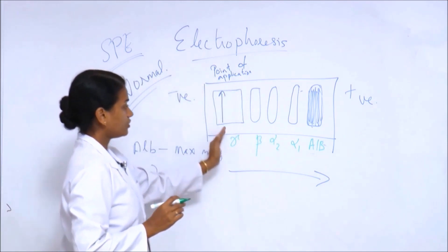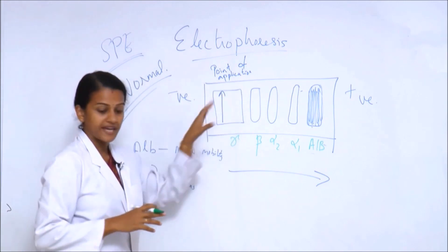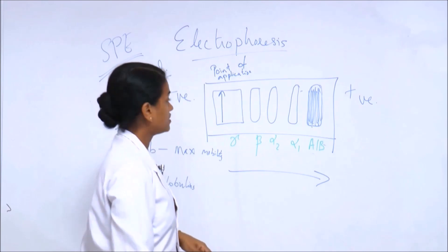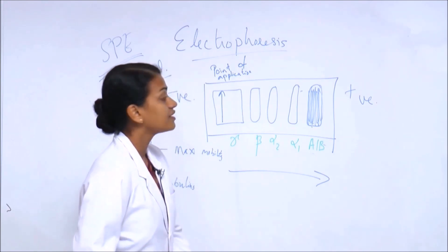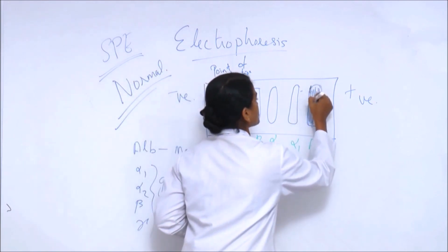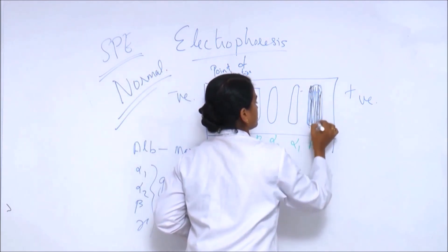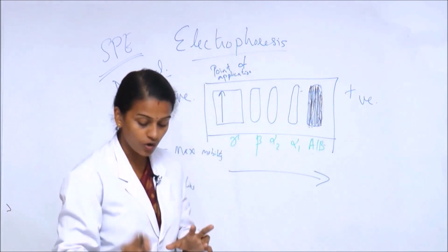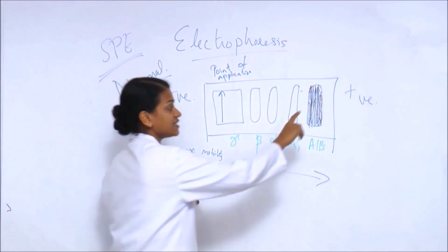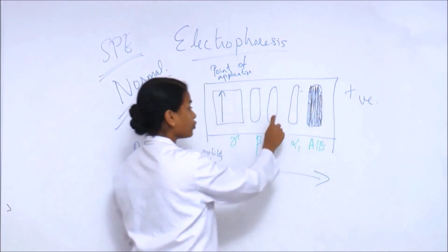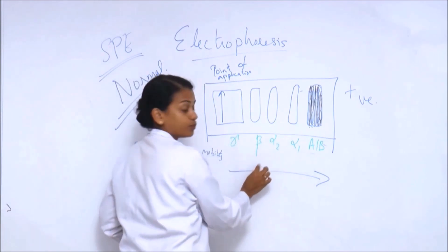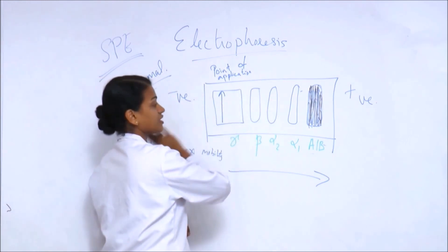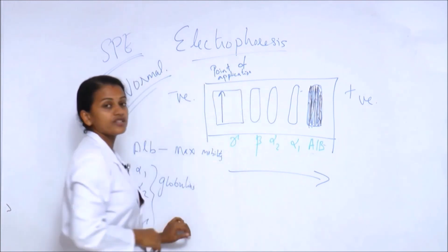The point of application coincides with the gamma band. Albumin is the thickest band - in the normal pattern there is only one thick band at the positive end, which is albumin. Followed by very thin bands for alpha 1, alpha 2, and beta. Gamma appears as a widely distributed thin band coinciding with the point of application.